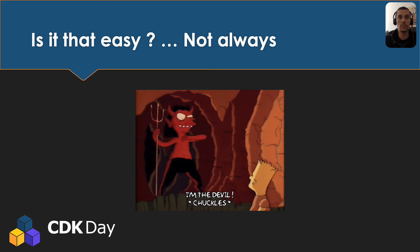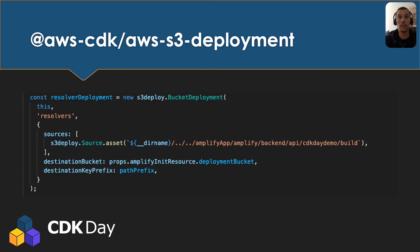I won't go into the full implementation details here due to lack of time, but the idea is to leverage S3 deployment constructs to upload those external resources into the right folder. As you can see, I upload the API resolvers to the right S3 buckets expected by the Amplify CloudFormation. All this code is on my GitHub — shared at the end of the presentation — and basically the idea is to leverage this S3 deployment construct to mimic what 'amplify push' does.